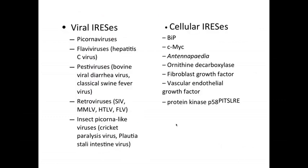We've since found IRESes in many viral genomes, and this is a selection of them here. You can see the picornaviruses, the flaviviruses, pestiviruses, and retroviruses, and insect picorna-like viruses have IRESes, as well as cellular mRNAs. These have been found to contain IRESes as well. Now, these cellular mRNAs, like many of the viral mRNAs that have IRESes, are capped.